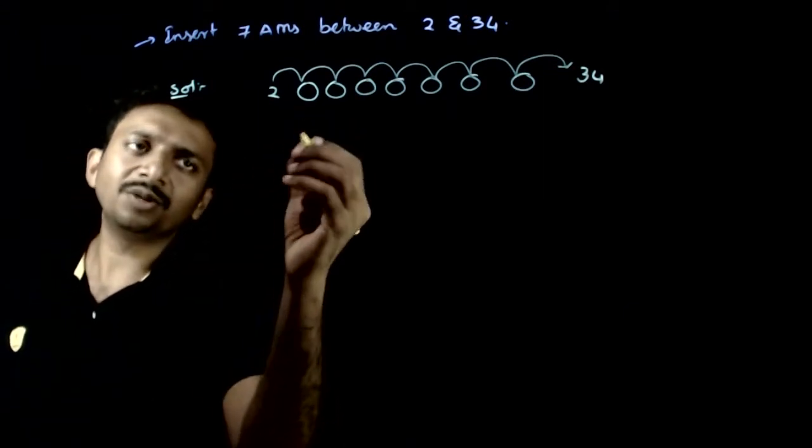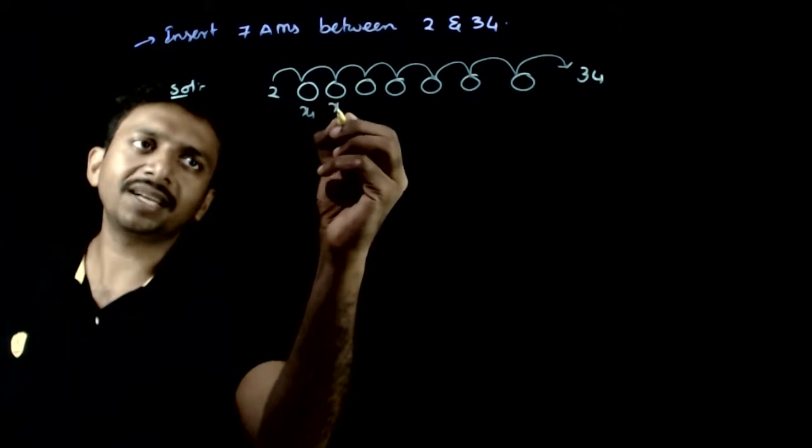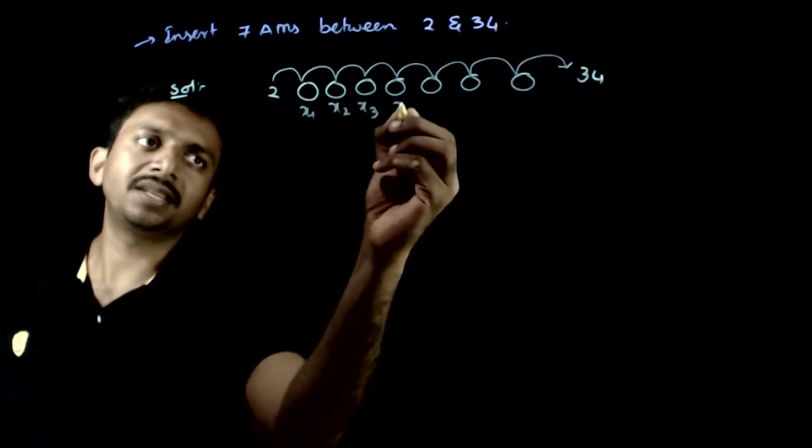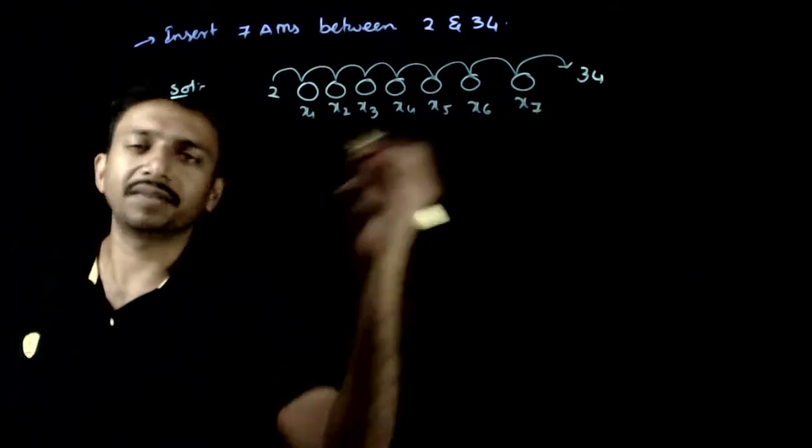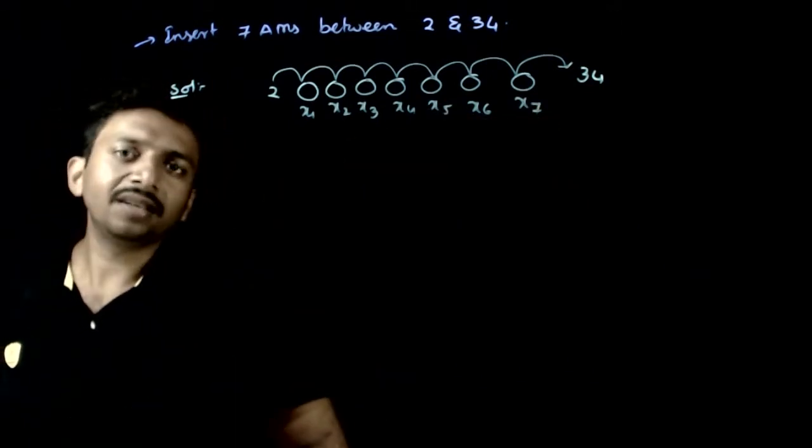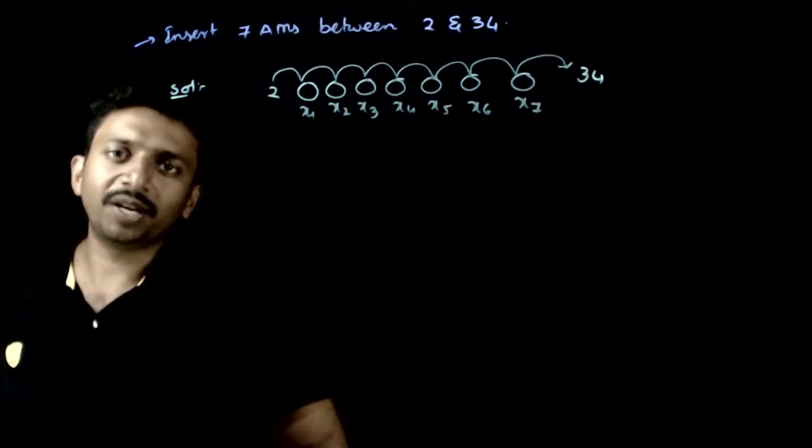So let us assume that the arithmetic means that are inserted are x1, x2, x3, x4, x5, x6, x7. So let us assume that these are the arithmetic means inserted.